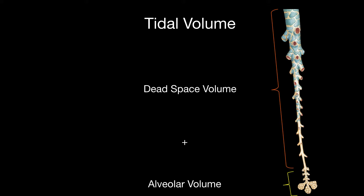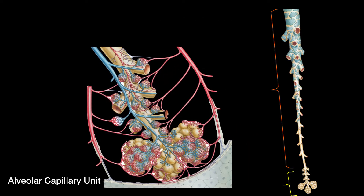Dead space volume is normal — we call this anatomic dead space. This occurs where the lungs ventilate but don't perfuse. Classic places for this are in the trachea and the large bronchi. Where ventilation and oxygenation actually occurs is in the alveolar volume, at the alveolar capillary unit. Here, the alveoli have oxygen that gets transmitted across the epithelial cells into the capillaries, and CO2 diffuses back into the alveoli and out into the air.